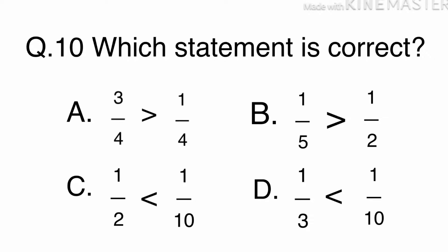Let's look at all the choices. 3 quarters is greater than 1 quarter. 1 fifth is not greater than a half. 1 half is not less than 1 tenth. 1 third is not less than 1 tenth.